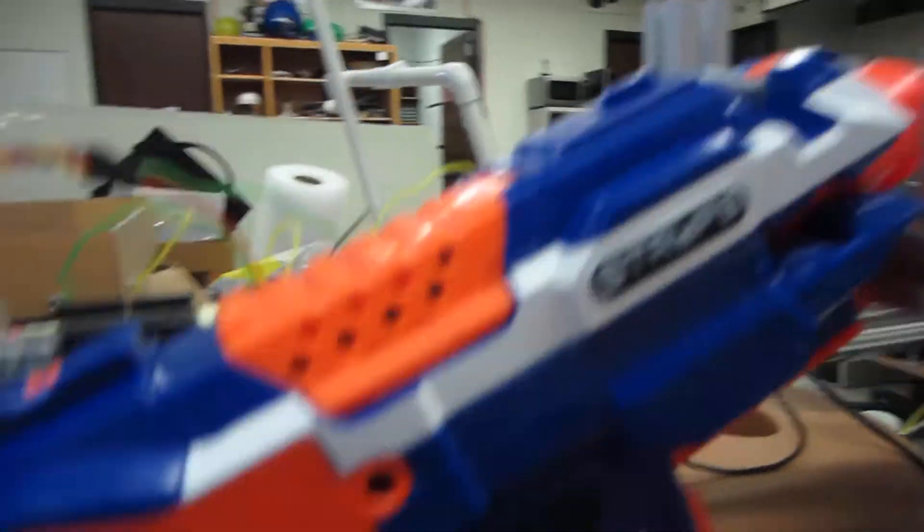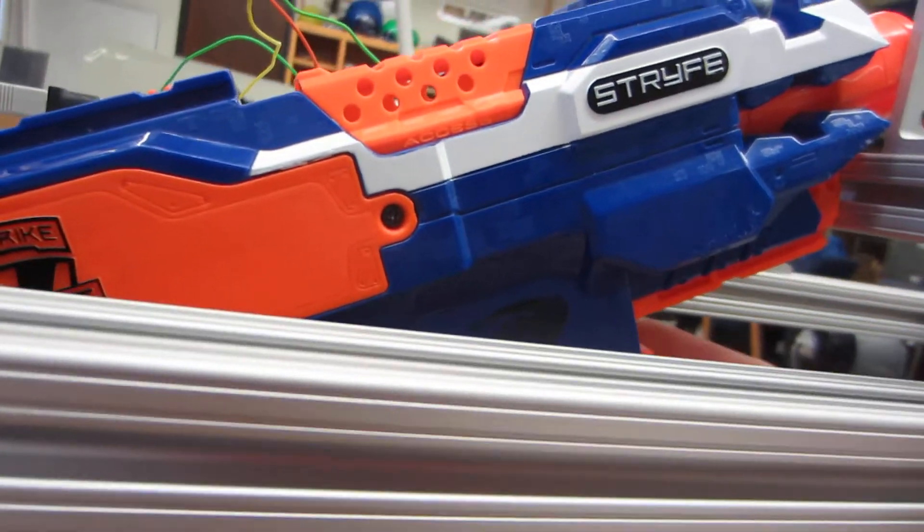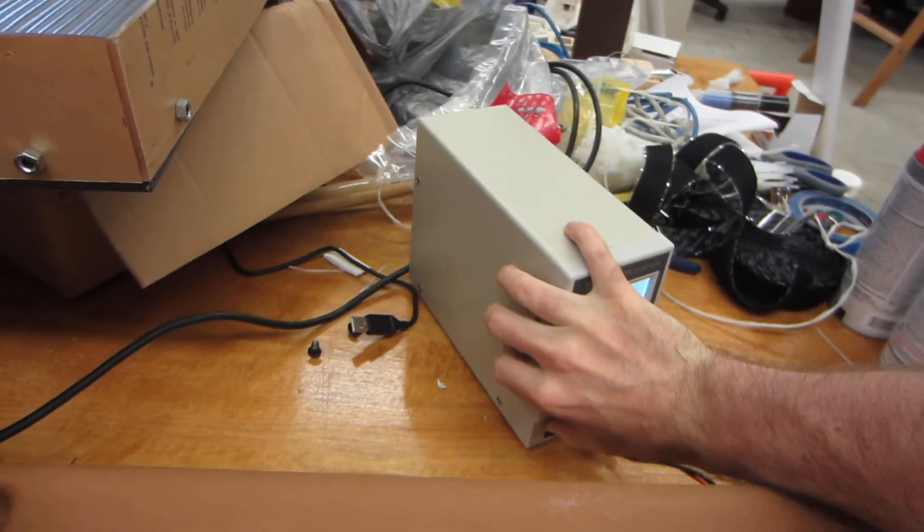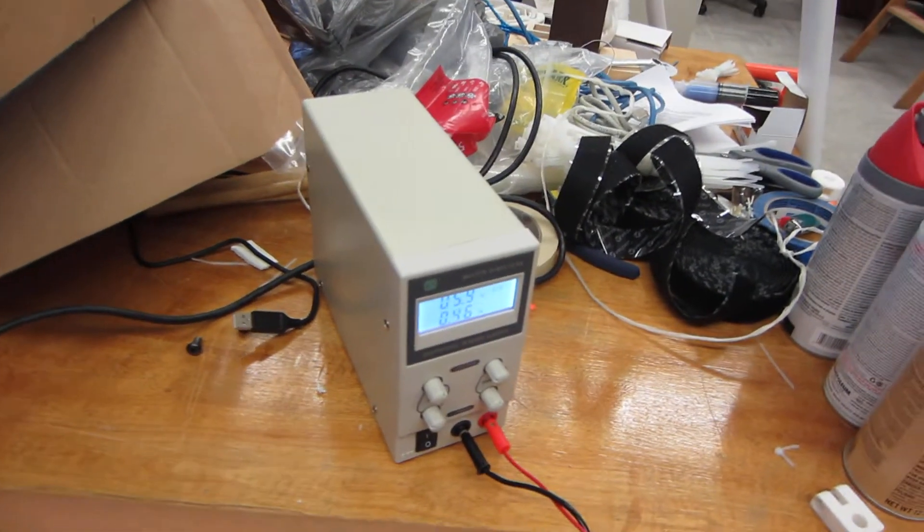All the darts are loaded. Let's slip this back on. We're going to turn power on. We're giving it 6 volts.